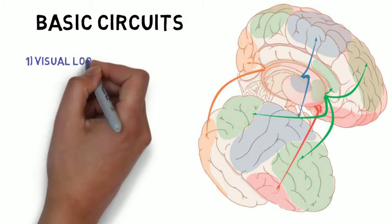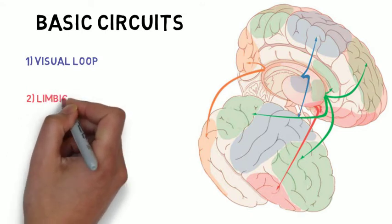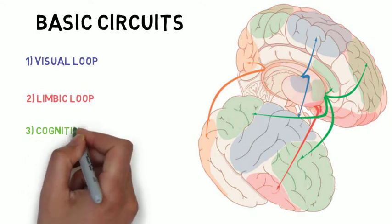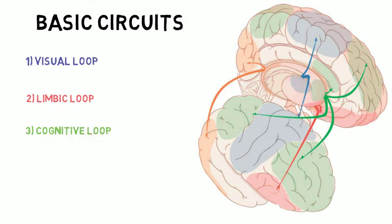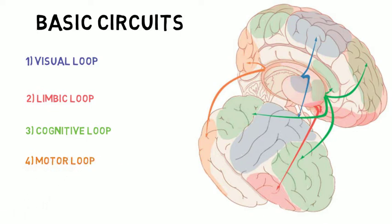In general, four circuits are identified. The visual loop involves the posterior regions of the caudate, or the body and the tail of the caudate, which receives afferents primarily from brain structures associated with high-level visual processing. The limbic loop involves the nucleus accumbens, which receives innervation from cortical regions associated with motivational processes such as the amygdala. The cognitive loop involves the anterior region of the caudate, which receives cortical afferents primarily from regions associated with executive functions. Finally, the motor loop involves the putamen, which is primarily innervated by cortical motor regions such as the primary motor cortex and the premotor cortex.